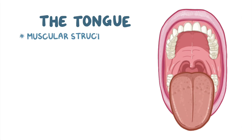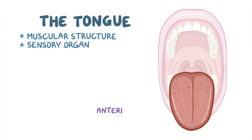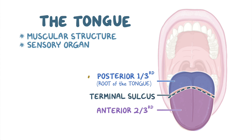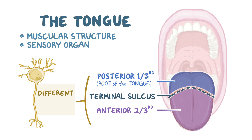The tongue is a muscular structure as well as a sensory organ that starts developing alongside the external face around week 4 of intrauterine life. A fully developed tongue consists of two parts: the anterior two-thirds and posterior one-third, which is called the root of the tongue. They are separated from each other by a shallow, v-shaped groove known as the terminal sulcus. The two parts develop separately, which results in them having different nerve supplies.